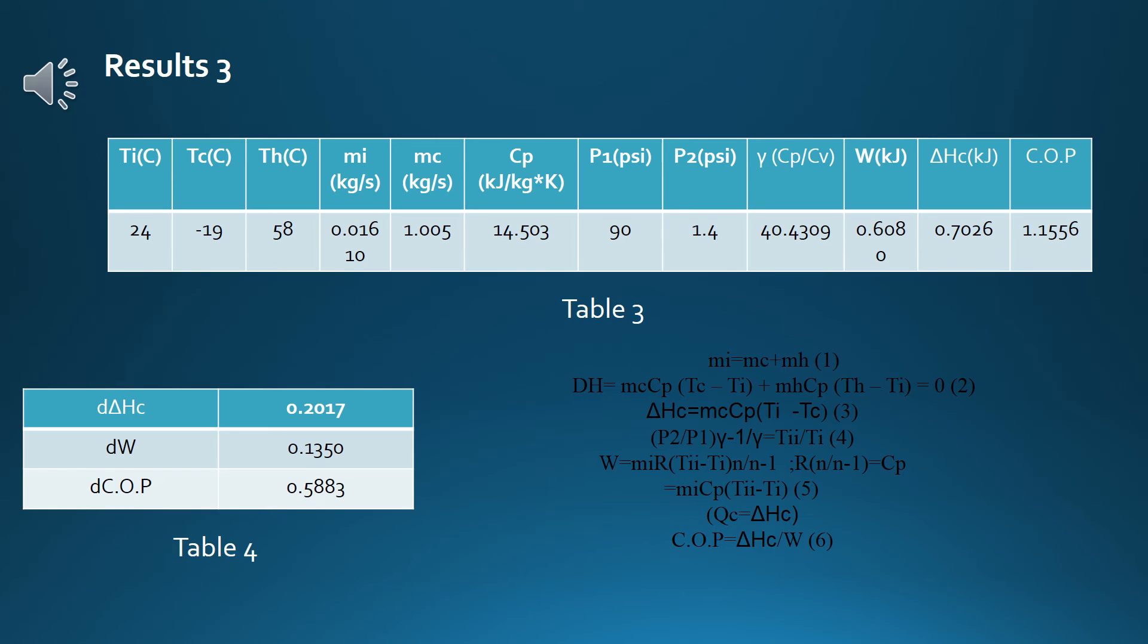The reason the uncertainty of COP is large is the uncertainty highly depends on measurement of temperatures of cold and hot side. When measuring the two temperatures, their values were changing all the time and not constant. In the measurement, the highest and lowest values for hot side and cold side were recorded. Therefore, the uncertainty is a very big number for the COP.